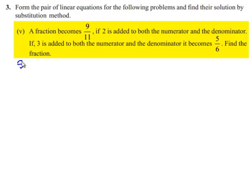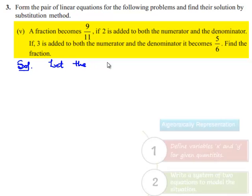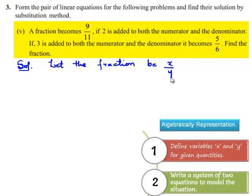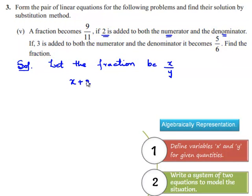So let us work out the solution for this problem. Let the fraction be x by y. So according to the given problem, if 2 is added to numerator as well as the denominator, it becomes 9 by 11. So we can write x plus 2 divided by y plus 2 is equal to 9 by 11.